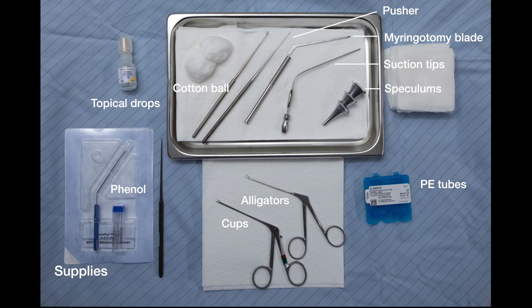When approaching the patient, obtain informed consent. The main risks associated with PE tube placement are persistent tympanic membrane perforation — about a 5% risk — and post-tube otorrhea. Other complications are very uncommon.